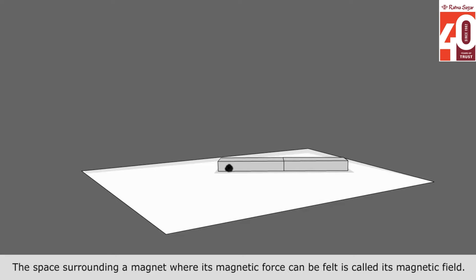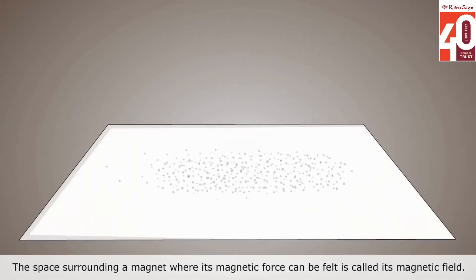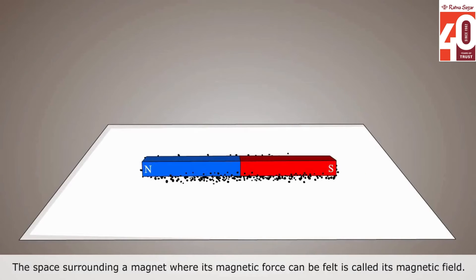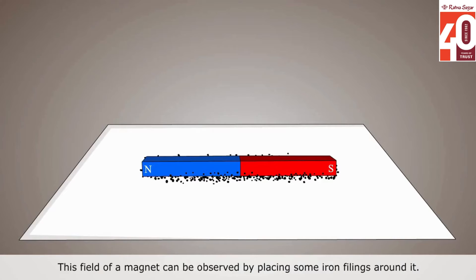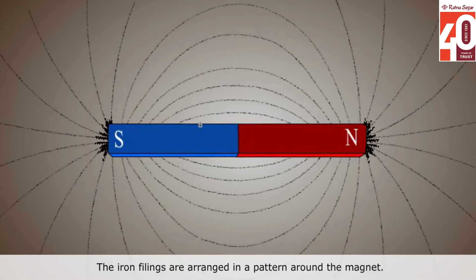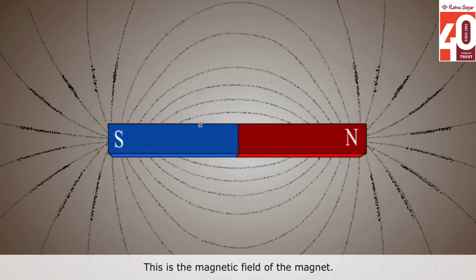The space surrounding a magnet where its magnetic force can be felt is called its magnetic field. This field of a magnet can be observed by placing some iron filings around it. The iron filings are arranged in a pattern around the magnet. This is the magnetic field of the magnet.